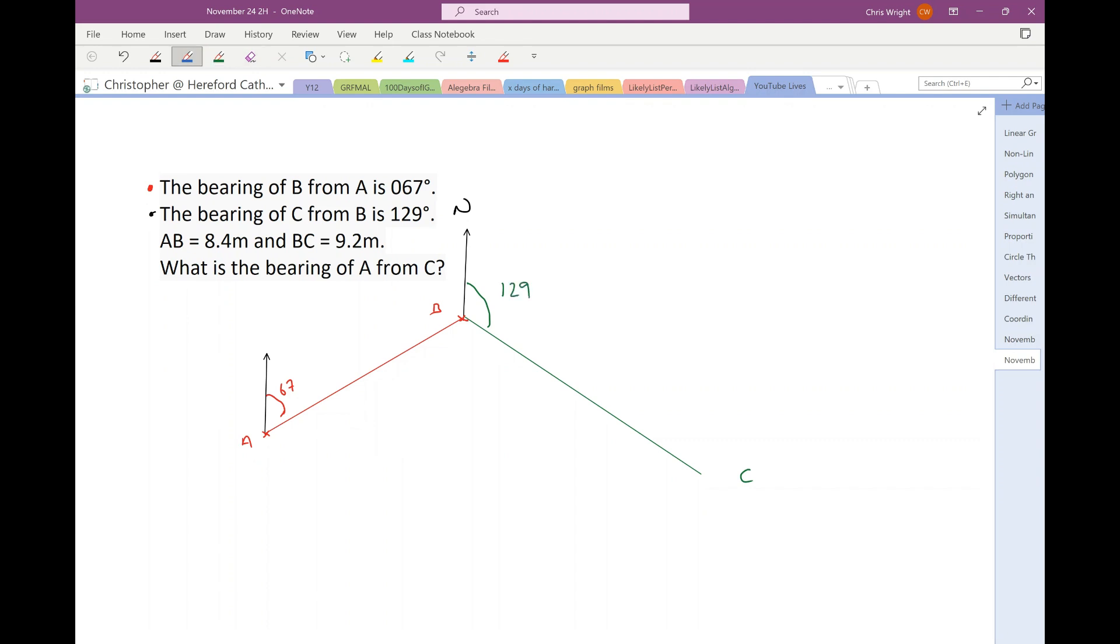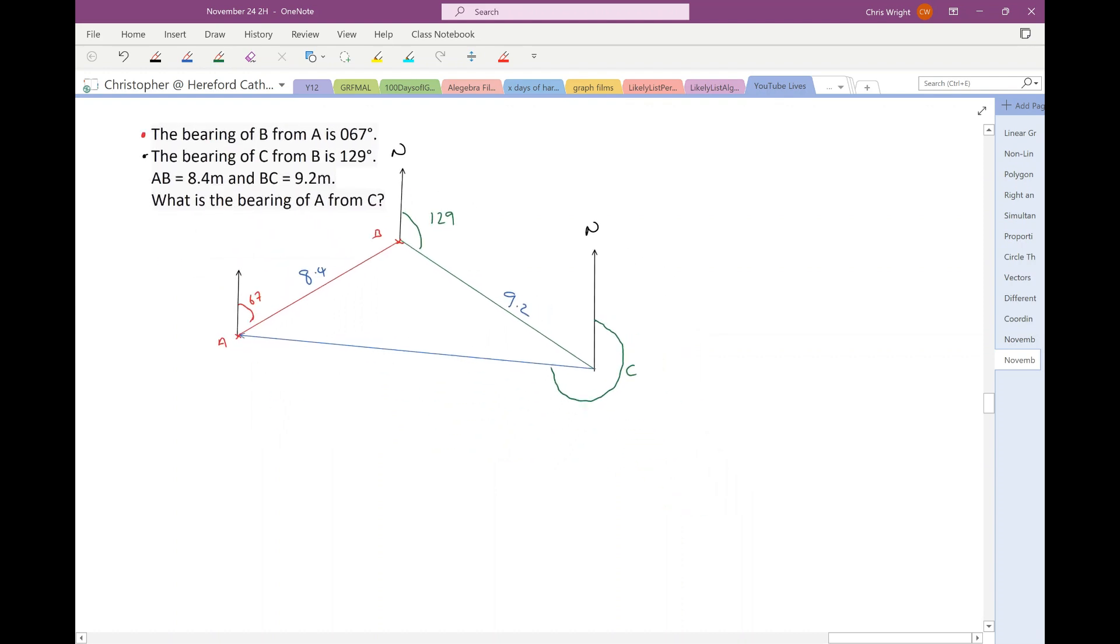And that angle there is 129. Now, AB is 8.4 and BC is 9.2. What is the bearing of A from C? Now, what is the bearing of A from C? Well, let's draw the line C, A, because that's the line we want to find the bearing of. So, we want to find the bearing of A from C. So, we want to find this bearing here. The bearing of A from C. So, we want to find that, right? Okay, good.